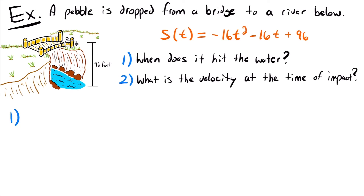Starting with the first question: we want to know when the pebble hits the water, which is when its position equals 0. The pebble starts at a height of 96 feet, and we want to know when it reaches a height of 0 feet. So we set the position function equal to 0 and solve for t, which will give us the time when the pebble hits the water.